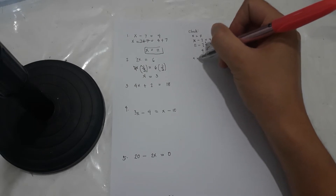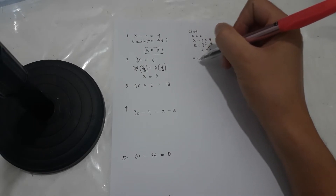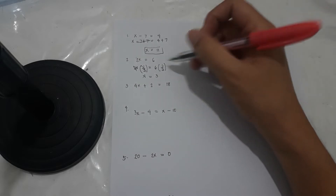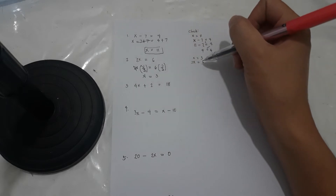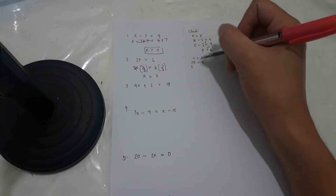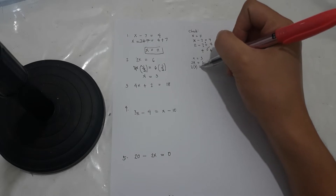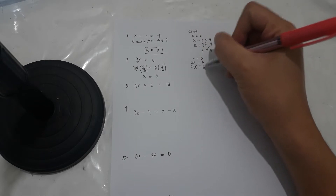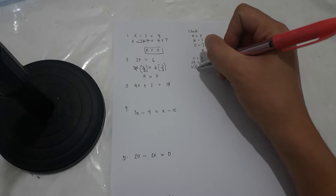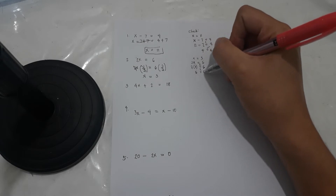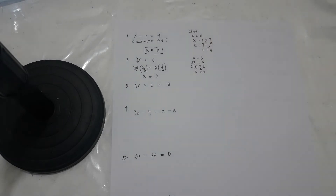To check: x equals 3. Copy the first equation, 2x is equal to 6. Replace x with 3 in parentheses — 2 times 3 is 6, 6 equals 6. Yes, correct.